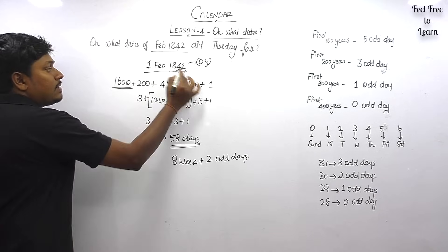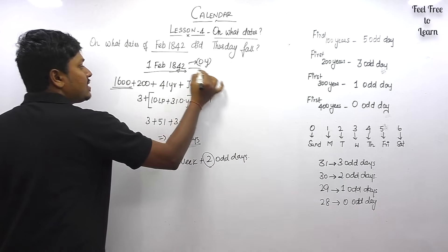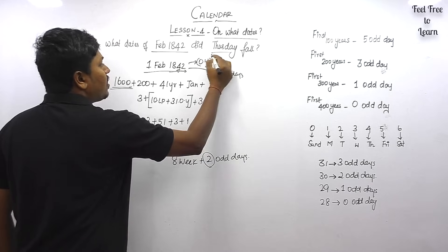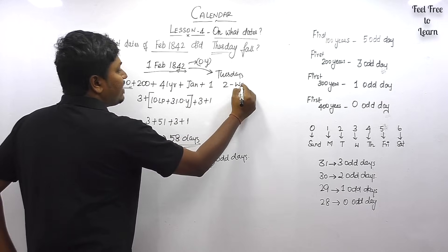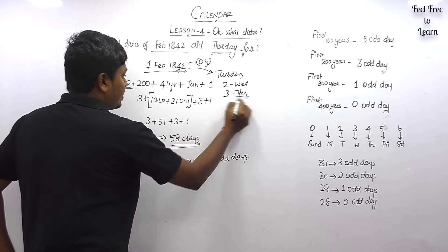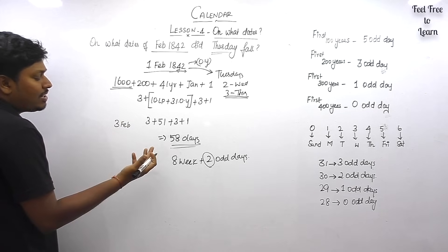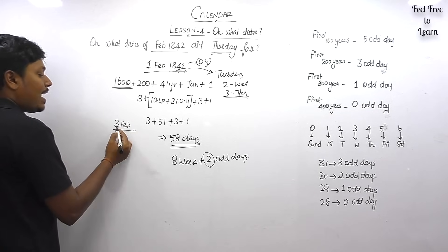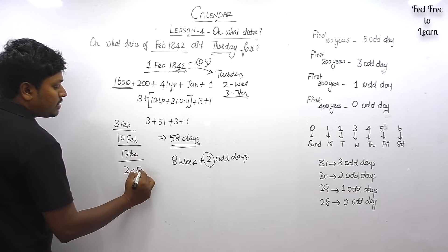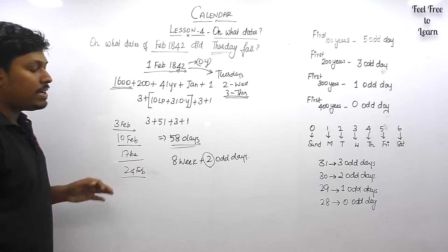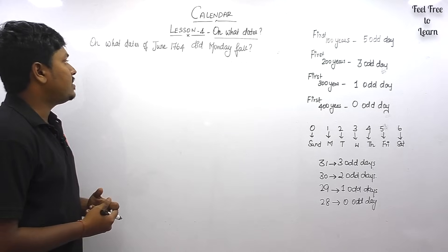So 1st February 1842 falls on the 2nd odd day, which is Tuesday. Our target is to find all the Thursdays. From Tuesday: 2nd February is Wednesday, 3rd February is Thursday — the first Thursday. All multiples of seven added to 3rd will also be Thursday: 3rd, 10th, 17th, 24th. So in February 1842, Thursdays fall on 3, 10, 17, 24.